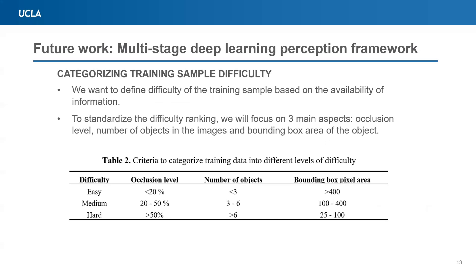We want to categorize the training sample difficulty based on the availability of information within the image. We focus on three main aspects: occlusion level, number of objects in the image, and the bounding box area of the objects. How we determine the criteria for easy, medium, and hard training samples is shown in the table below.